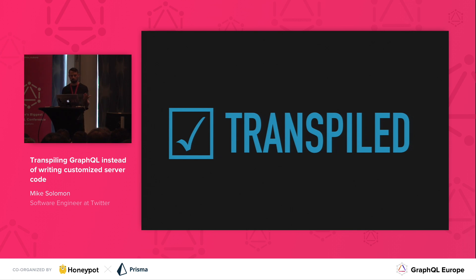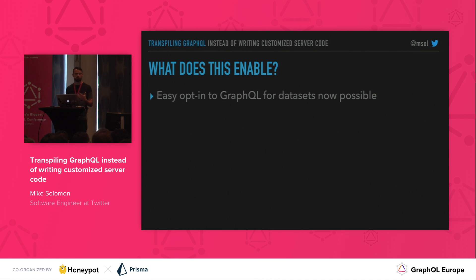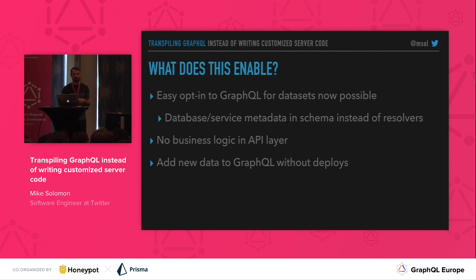Now we've seen how we can automatically generate implementations for our queries. So what does this enable for us? We've made it possible to build a system with easy opt-in to GraphQL for data sets. We eliminated the need for developers to make changes in the API layer by hand. We can use a data access layer that tells us where data in the graph lives, making it easy to augment the schema and wire up new connections dynamically. There's no business logic in the API layer — you actually can't write any into resolvers because you don't write resolvers — and it will be much easier to add new data to GraphQL without deploys.